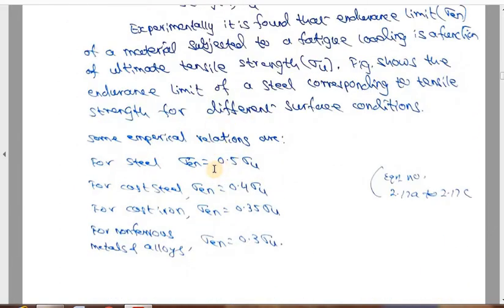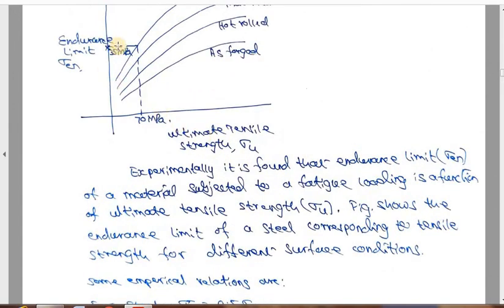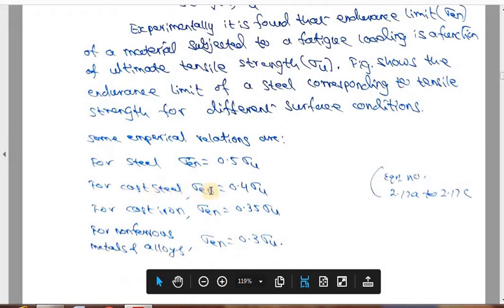The experimental results are shown graphically, with endurance limit values given in the design data handbook (Tables 2.17a to 2.17c). For a steel member, the endurance limit sigma_en = 0.5 × sigma_u. For cast steel, sigma_en = 0.4 × sigma_u. For cast iron, sigma_en = 0.35 × sigma_u. For non-ferrous metals and alloys, sigma_en = 0.35 × sigma_u. This is the endurance limit stress expressed as a proportion of the ultimate stress value.